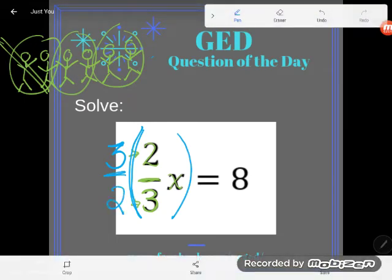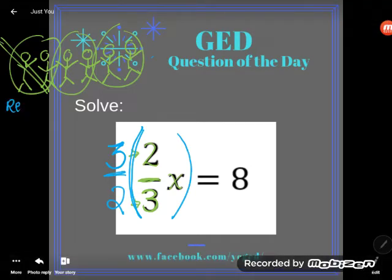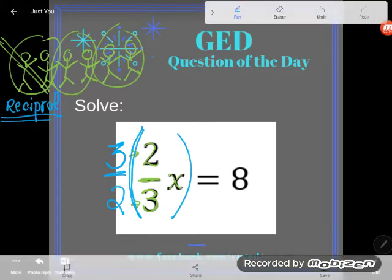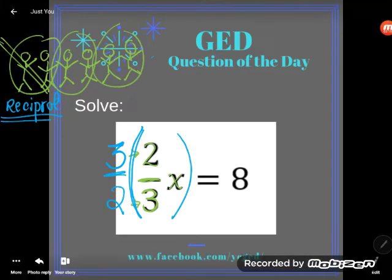And this number, notice it's a flip of the original fraction. It's known as the reciprocal. The flip of a fraction is known as its reciprocal. Oh, I just spelled reciprocal wrong. Re-cip-ro-cal.